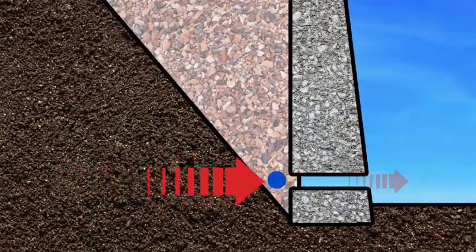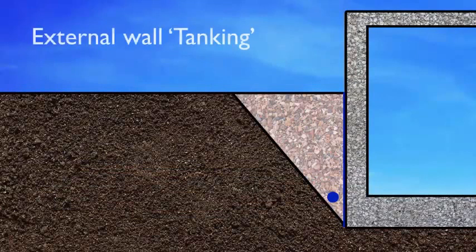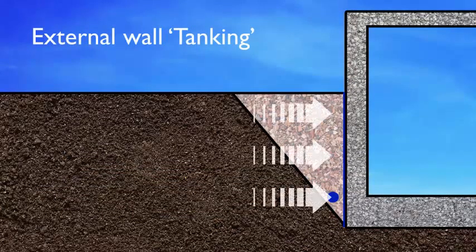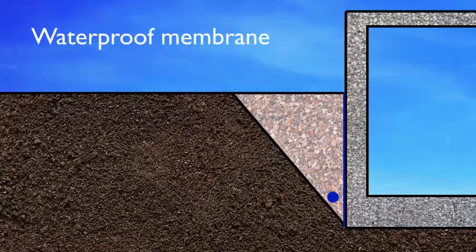In some cases, retaining walls form the external wall of a building and therefore must be adequately sealed to prevent moisture entering the building. This is achieved by applying tanking, which is a waterproofing system that incorporates waterproof membranes.